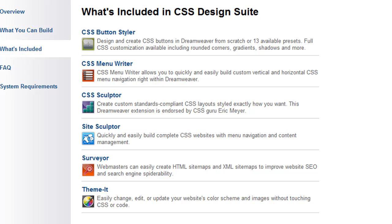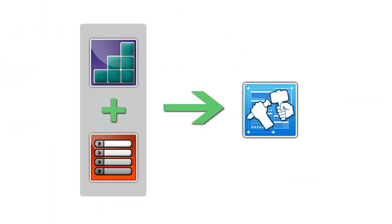Many of the tools have been built to work with one another. For example, Site Sculptor will combine your CSS Sculptor layout and CSS Menu Writer menu to build your entire CSS-based website. Combining these three Dreamweaver extensions allows you to produce your own custom Dreamweaver website in just a matter of minutes.